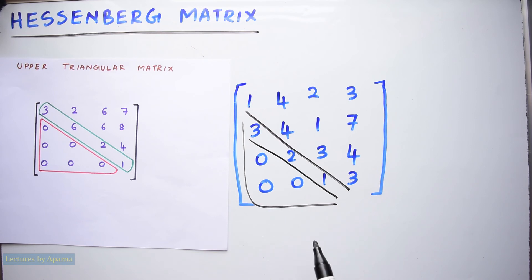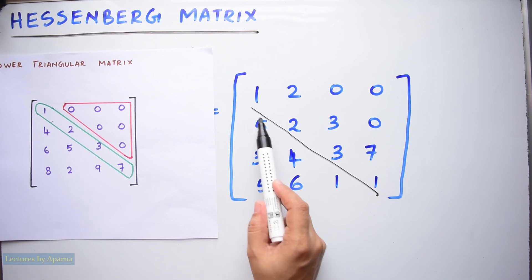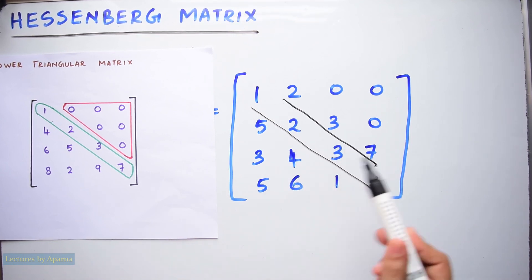Now, let us see lower Hessenberg matrix. Here till here it is a lower triangular matrix. But the elements in the diagonal just above the main diagonal is non-zero elements. So, this will become a lower Hessenberg matrix.